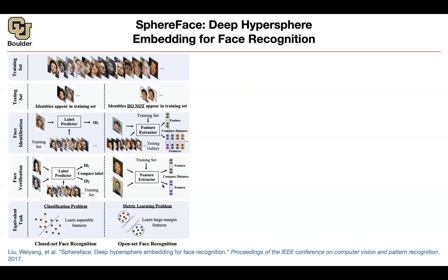If you are able to compare two images, you are going to be able to compare one image to a set of images, find the one that is the closest, and then identify that person. So solving face verification is enough — having an algorithm for it lets you generalize to face identification. That's the big picture. What we want to do next is metric learning for the open-set face problem.